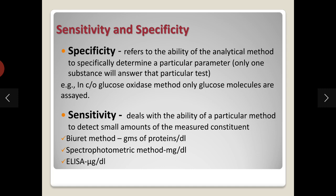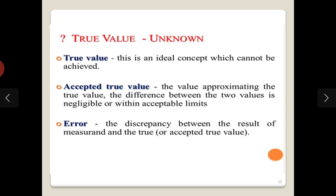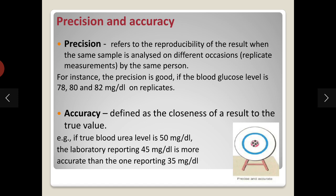The true value is an ideal concept — it is a known value which cannot be achieved. The accepted true value is the value approximating the true value where the difference between the two is negligible or within acceptable limits. Error is the discrepancy between the measured result and the true or accepted true value.